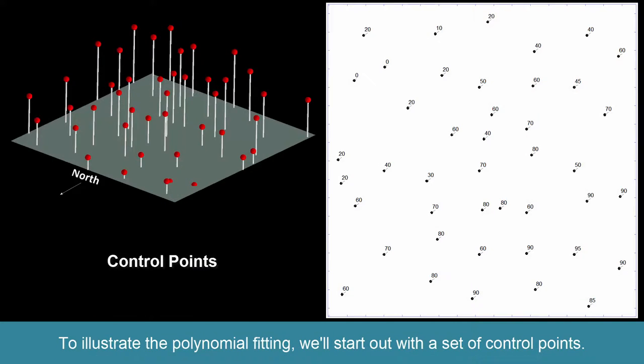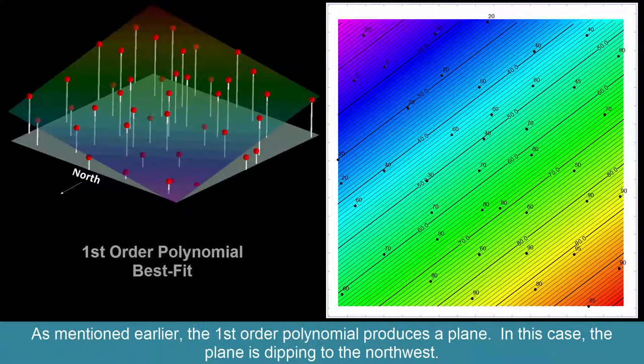To illustrate the polynomial fitting, we'll start out with a set of control points. As mentioned earlier, the first-order polynomial produces a plane. In this case, the plane is dipping to the northwest.